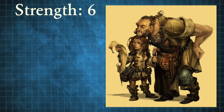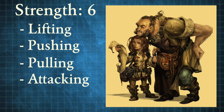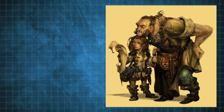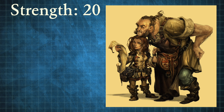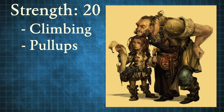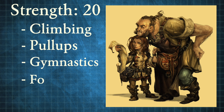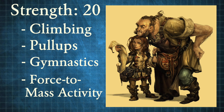So to summarize: a halfling is going to have a strength of about 6 when it comes to lifting, pushing, pulling, attacking, doing damage, that sort of thing. But a halfling should have a strength of about 20 when it comes to climbing, pull-ups, or gymnastics — anything that's a matter of force-to-mass ratio. In real terms, a halfling would be half badass and half weakling. It all depends on the circumstance.